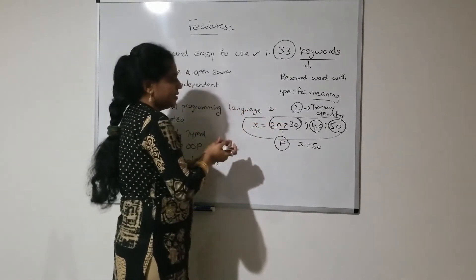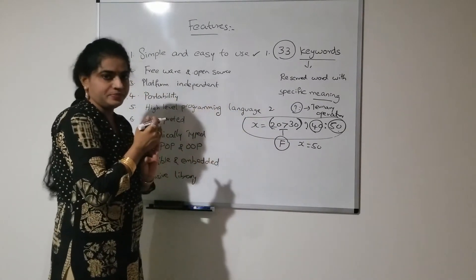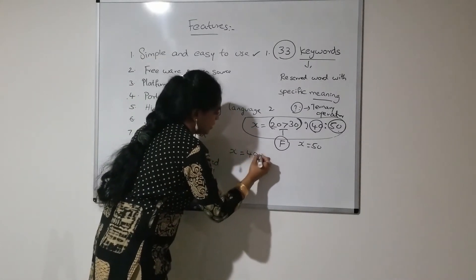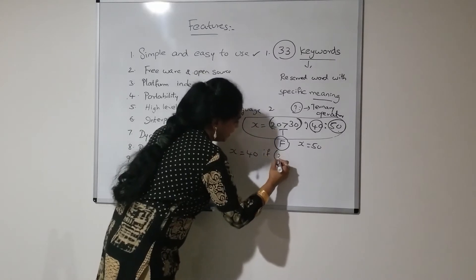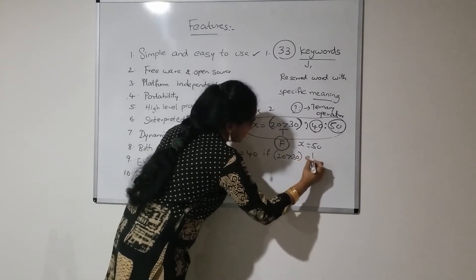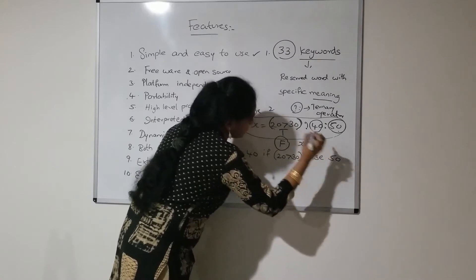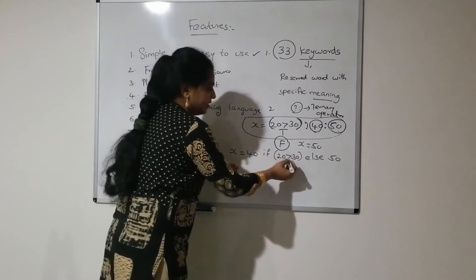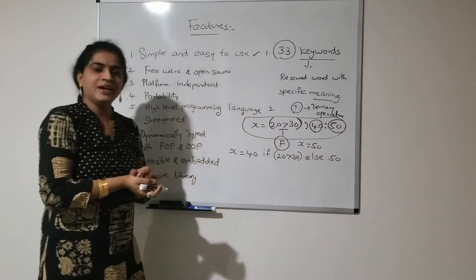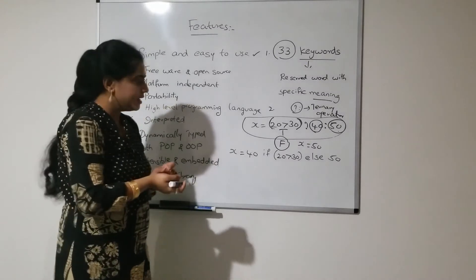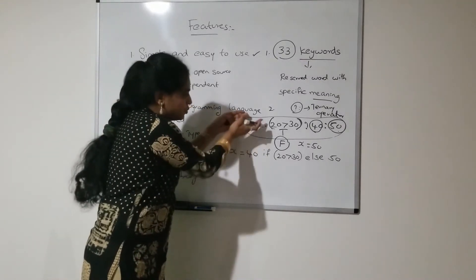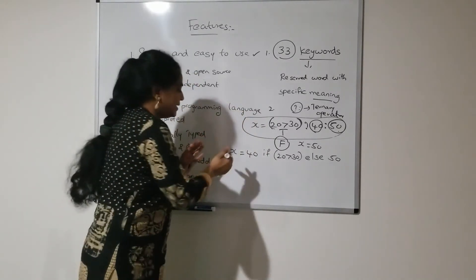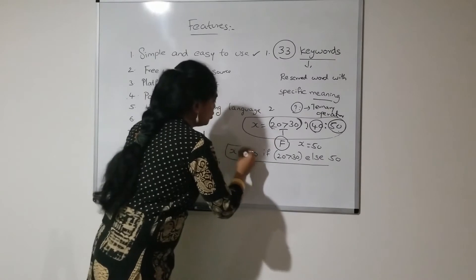The same code I am writing in Python: x equal to 40 if 20 greater than 30 else 50. That means if this condition is true, this will be executed. If this condition is false, the one followed by the else statement will be automatically executed.